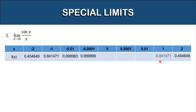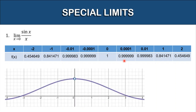If x is 1, here is the value of the function; if x is 0.01, here is the value; if x is 0.0001, this is the value. As we notice, both directions — from left and right — are approaching a specific number, and that is 1. Here is the graph of our function.